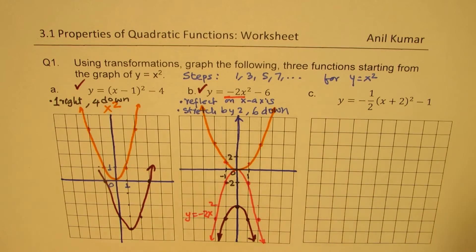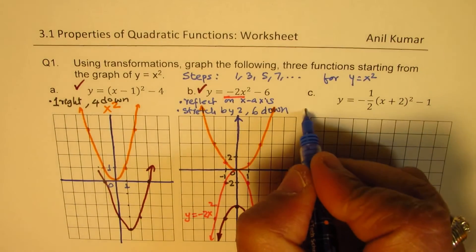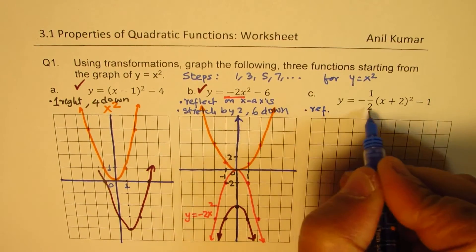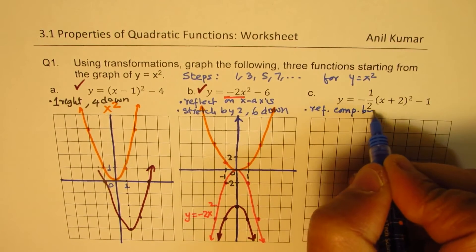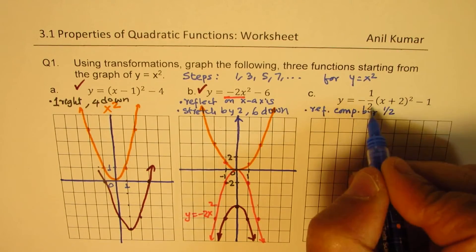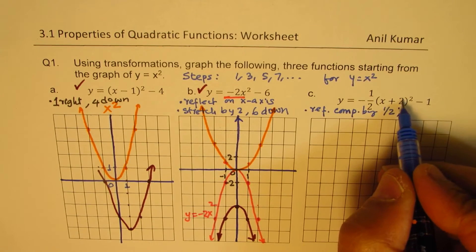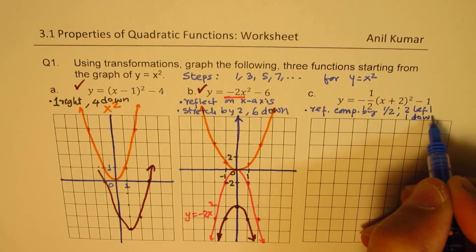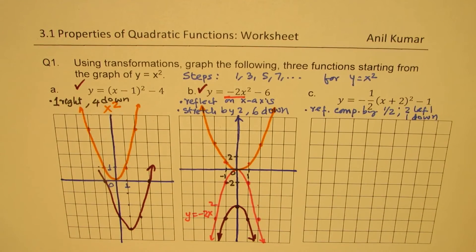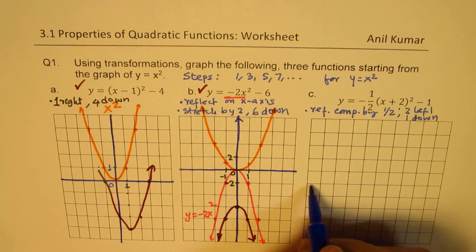For the next function, we have a vertical compression by a factor of half and also a reflection. So the transformations are: reflection, compression by half, then two units to the left, and one down. That is the transformation we are going to apply to our graph.